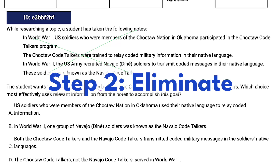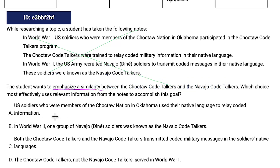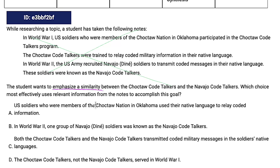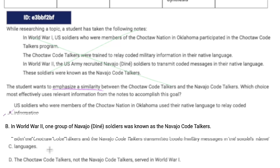Step two is to eliminate answers that don't line up with your goal. So let's take a look. Choice A: U.S. soldiers who are members of the Choctaw used their native language. If we're trying to emphasize a similarity between the two — the Navajo and the Choctaw — and it only mentions one, there's no similarity. So A is out. Looking at B, I see Navajo but only Navajo — same problem. We don't have Choctaw and Navajo, so it can't be B.